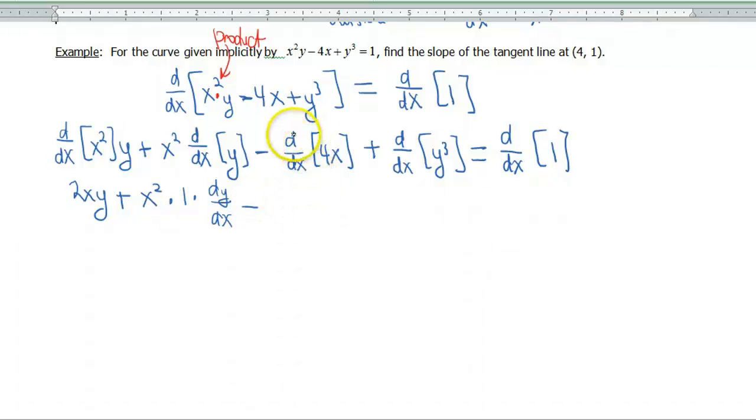Minus, now the derivative with respect to x of 4x, that's just 4. Plus, derivative with respect to x of y³. Well, y³ is like our outside function. So if we do the derivative of that, that's gonna give us 3y². Now we have to multiply by, what's the derivative of y with respect to x? Well, dy/dx. So that's really the derivative of our inside function, because we don't know what that function is. Equals, then the derivative of 1 is simply 0.